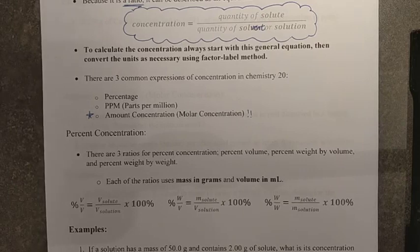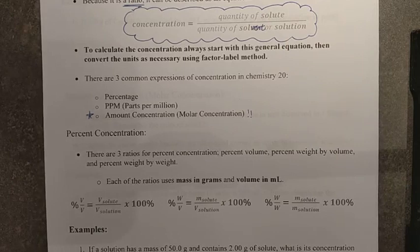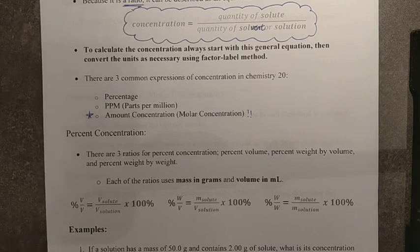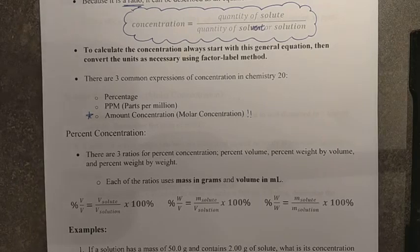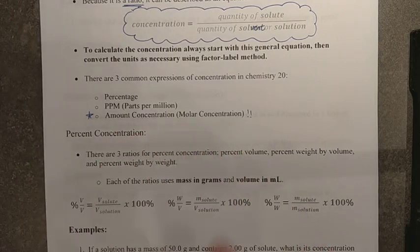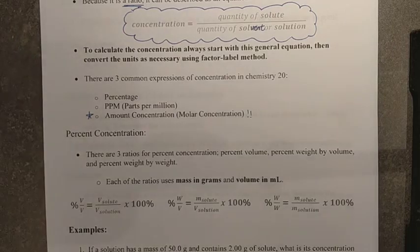Parts per million comes up, but it's retaught. I wouldn't worry about it too much. Percentage, again, it's a very consumer way of looking at things. If you were to go shopping at the grocery store, you would see a lot of your concentrations given as percentages. So, I'll do a couple of examples of percentage and PPM. They will be minimized or reduced on your Chapter 5 quiz, but expect a good number of your calculations on amount concentration. That's the one that I want you guys to focus on.